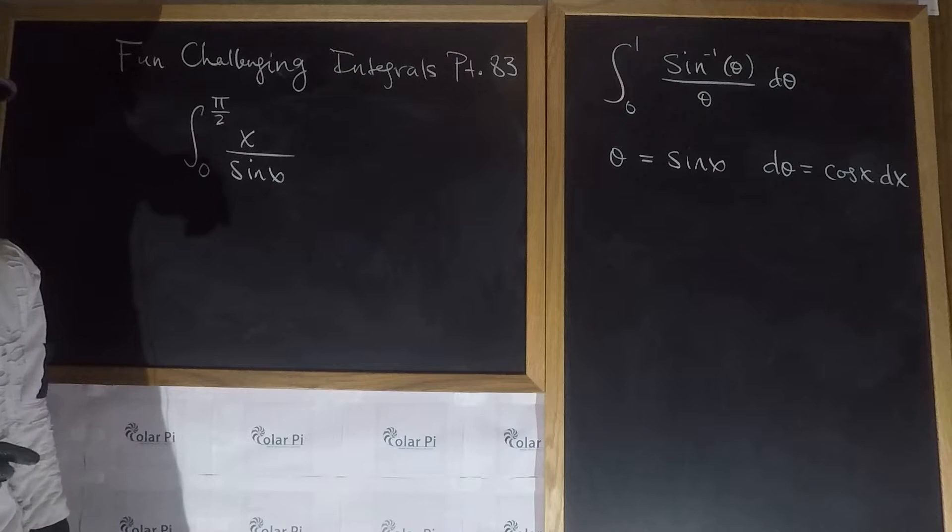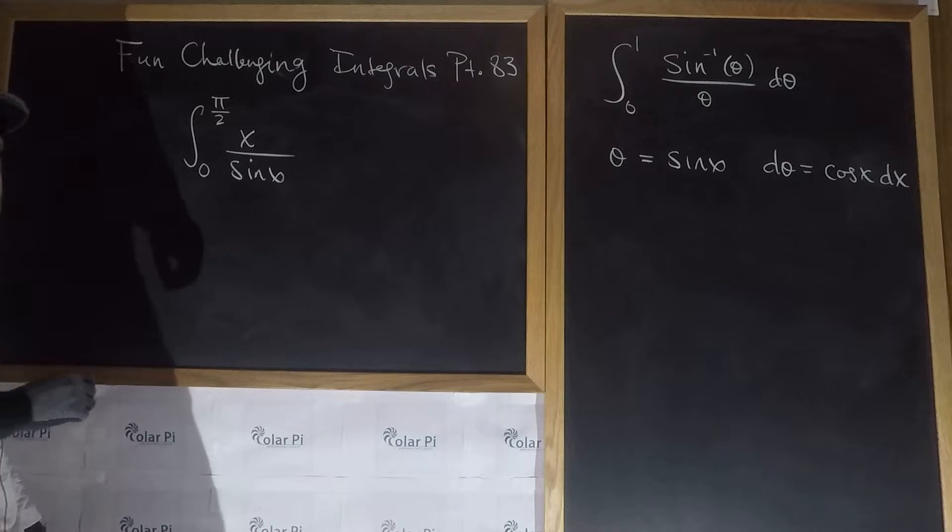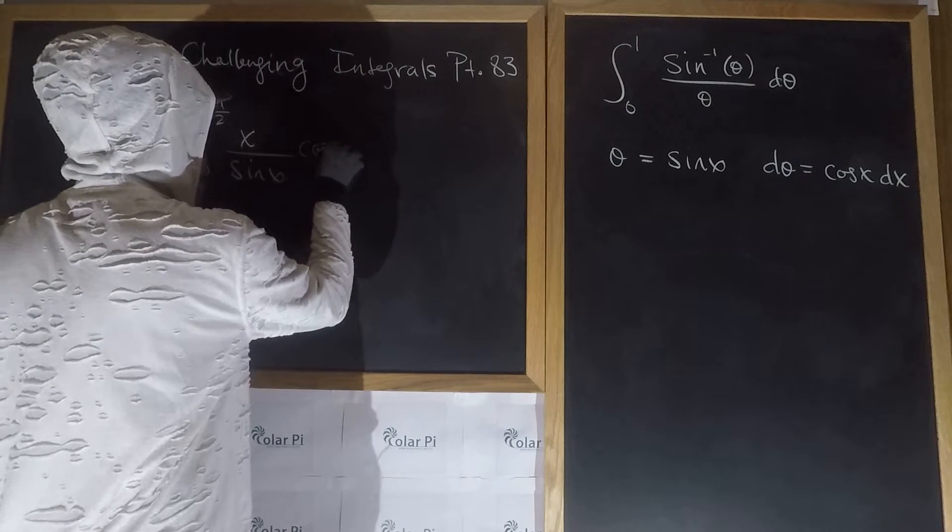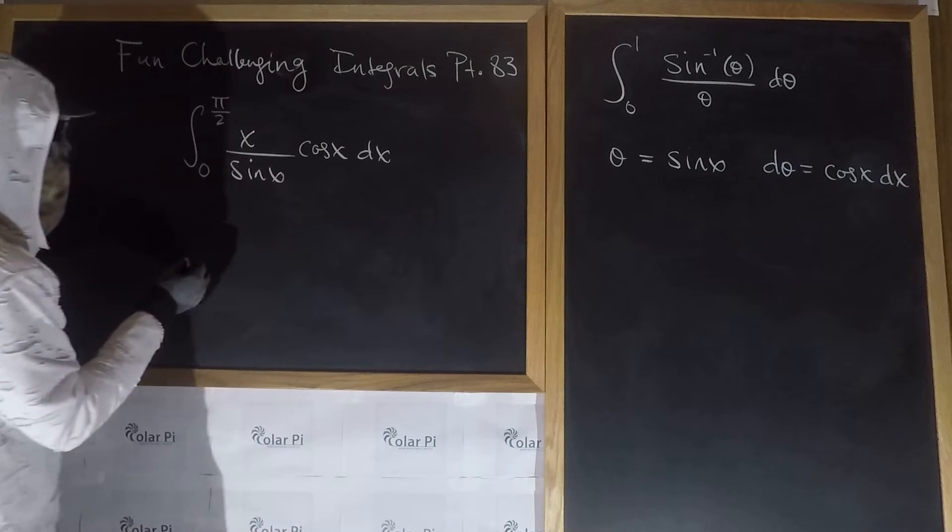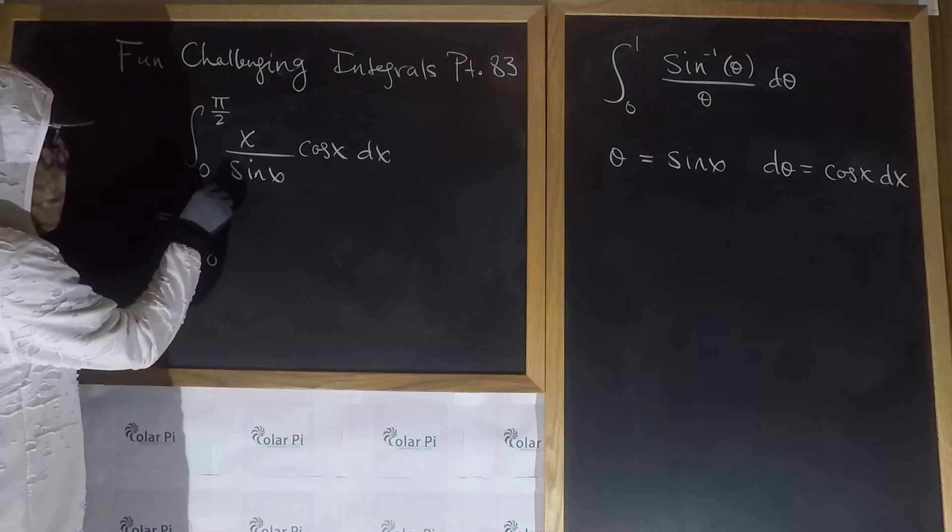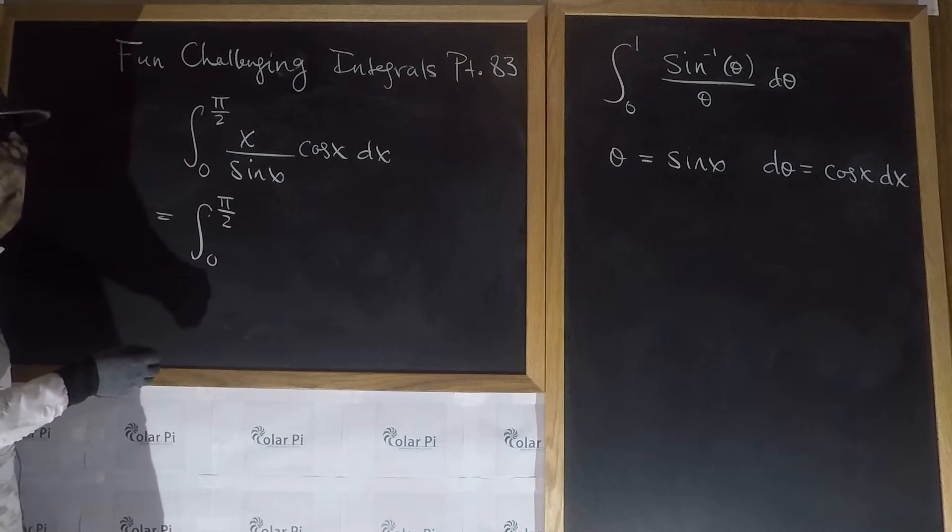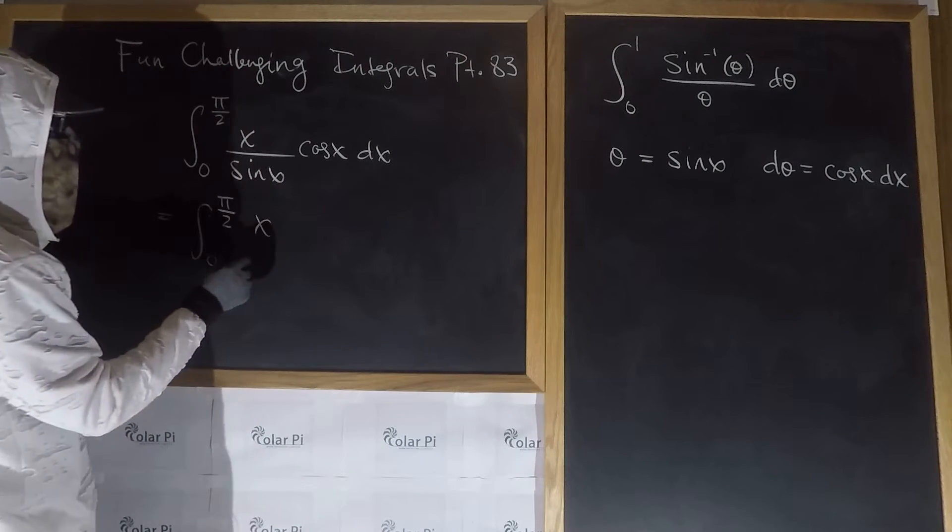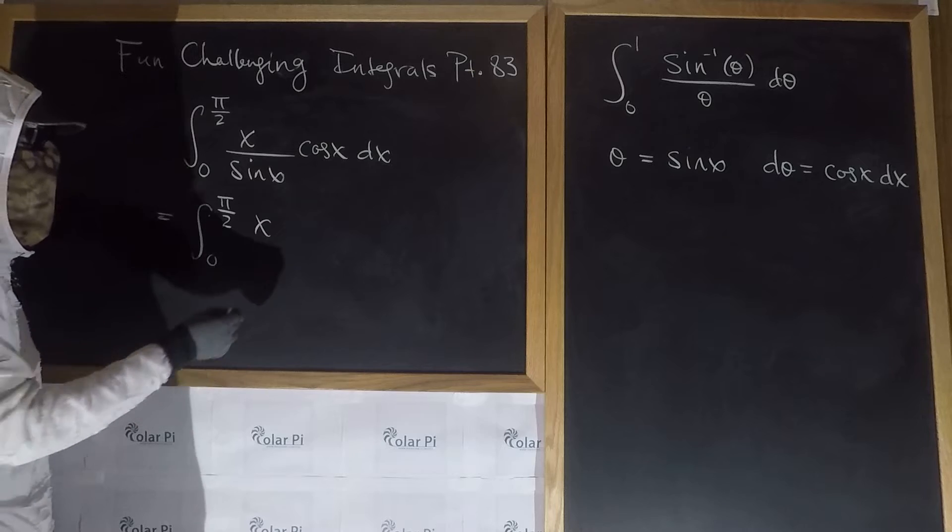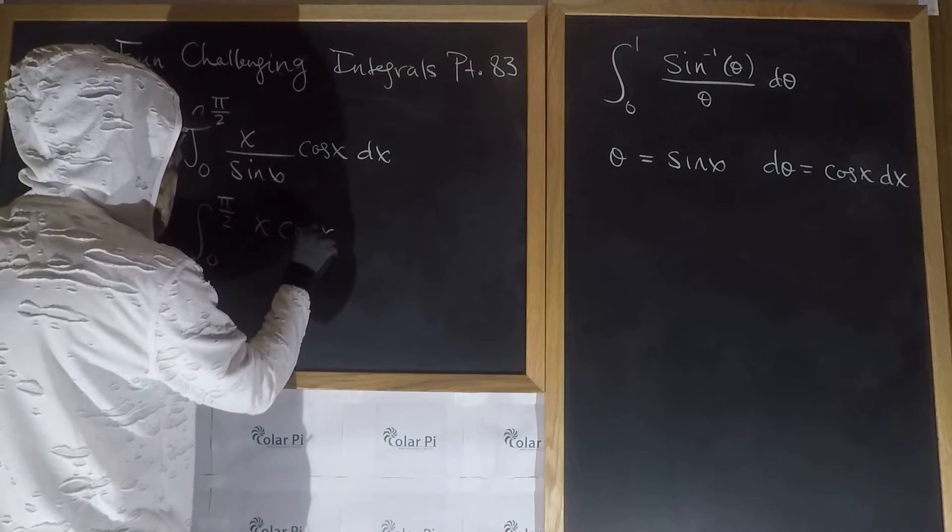But we also have d theta being cosine x dx, so we have cosine x dx. This gives us zero to pi over two, and then it's x times cos x over sine x, which is cot x, and then dx.